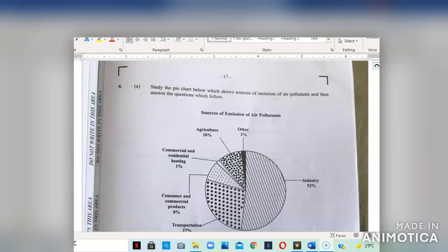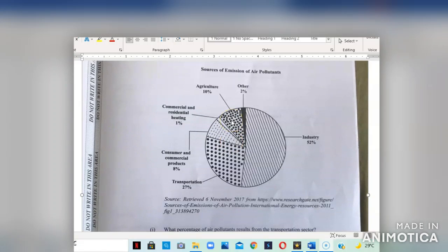Welcome back to Geography World's channel. For this video, we'll be looking at the 2019 May-June CSEC paper 2. Now, we'll be focusing on question 4 for this video. We're shown a pie chart which shows the source of emission of pollutants and we're to answer the questions that follow. This is a pie chart showing you the source of emission of air pollutants.